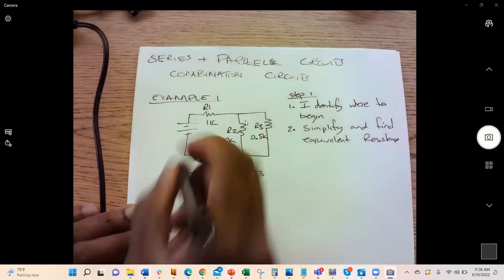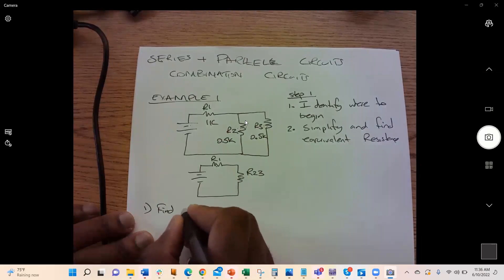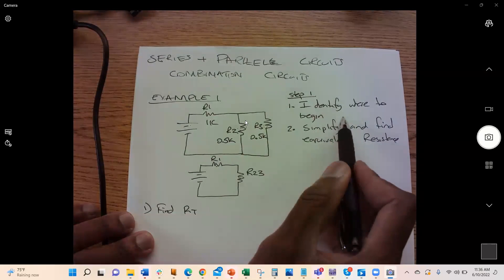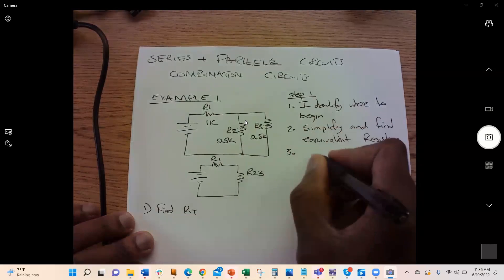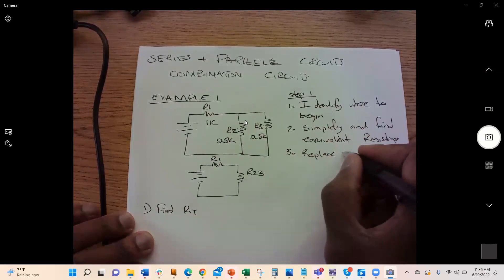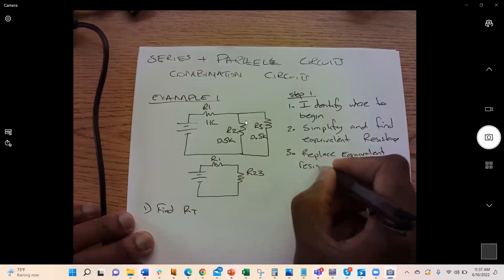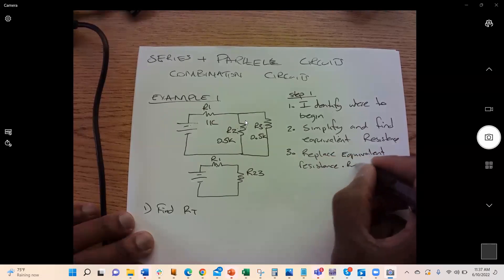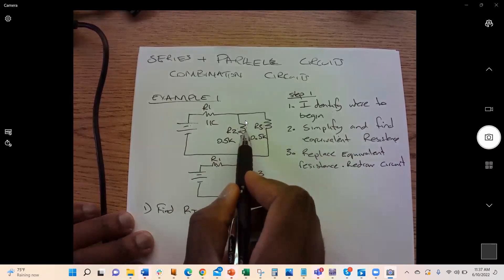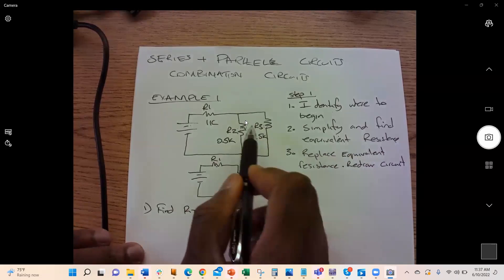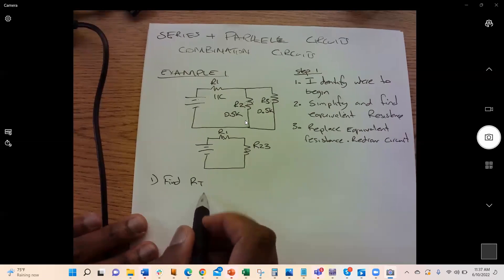In solving this type of problem, first find the equivalent resistance RT. To find RT, identify where to start simplifying, then replace the equivalent resistance in the circuit. After finding RT, find the total current, then find the voltage drops across each component, and finally determine the branch currents.